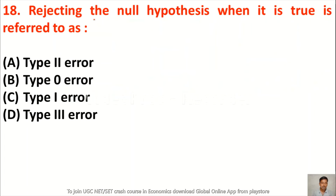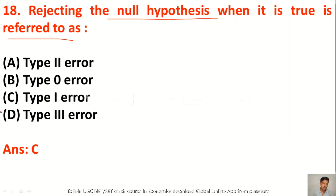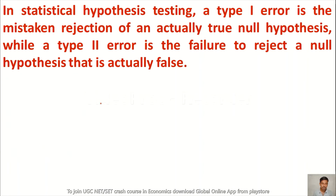Question 18: Rejecting the null hypothesis when it is true is referred to as — type 2 error, type 0 error, type 1 error, or type 3 error. We reject it even though it is true — it is known as type 1 error. If you reject the true hypothesis it is a type 1 error; if you fail to accept the true hypothesis then it is a type 2 error.